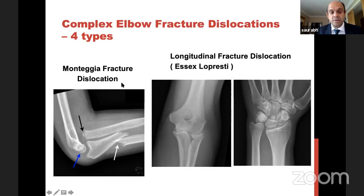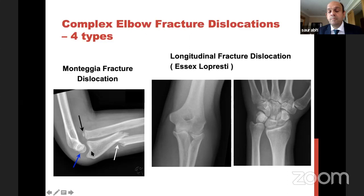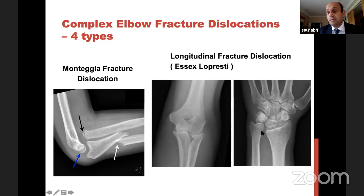Monteggia is, as we all know, a proximal ulna fracture and the radial head dislocates — it can come out in any direction: anterior, posterior, lateral. We have the Bado classification for that. Because the radial head can come out in any direction, the relationship of proximal radius to proximal ulna — PRUJ, the proximal radioulnar joint — is disturbed. For longitudinal fracture-dislocation via axial load to the wrist, if you see a comminuted radial head, always do a wrist X-ray because the DRUJ may also be disrupted — very important.